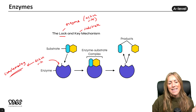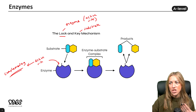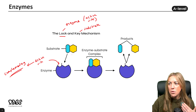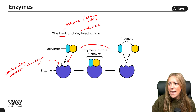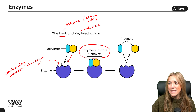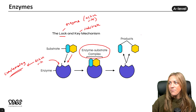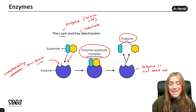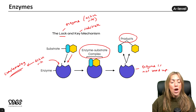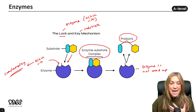Be careful not to say the active site is the same shape as the substrate — it is complementary in shape, so the substrate fits into and binds to the active site, forming the enzyme-substrate complex. The reaction takes place, bonds in the substrate are hydrolyzed, and products form. The enzyme is not used up and can be reused many times.